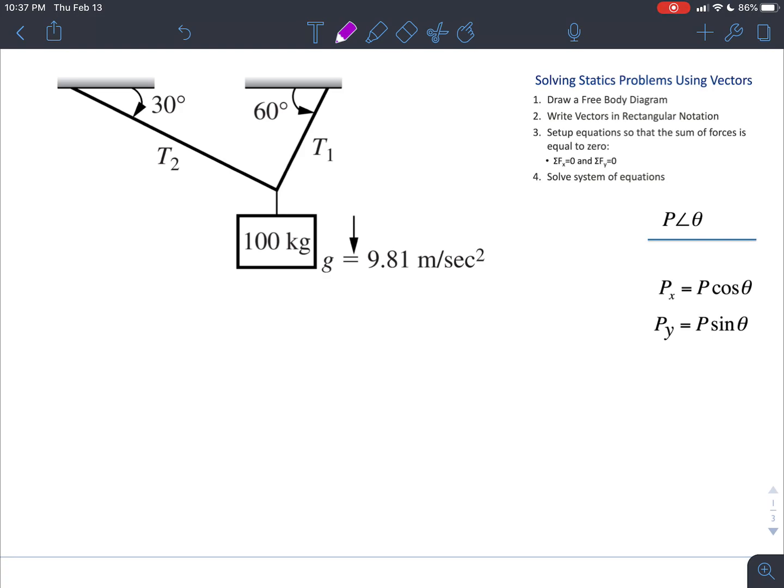In order to do that we use the classic force equals mass times acceleration formula. In this case our mass is 100 kilograms and our acceleration is the acceleration due to gravity which is 9.81 meters per second squared. When we multiply those together we get 980 newtons. Newton is a unit of force that is equivalent to kilogram meters per second squared.